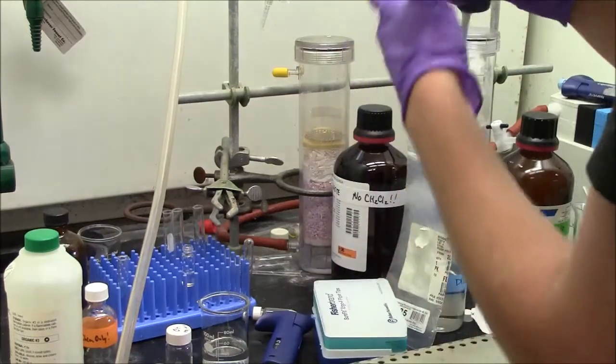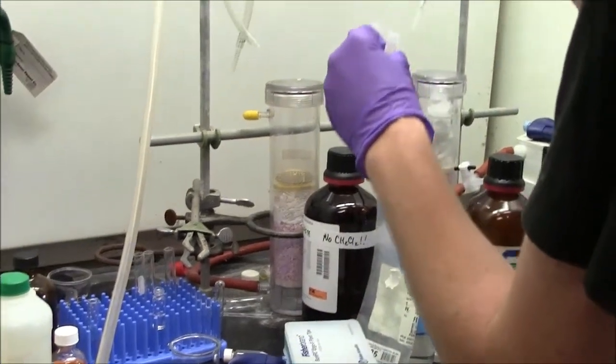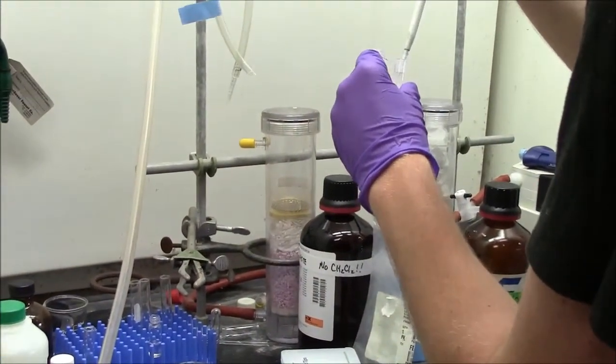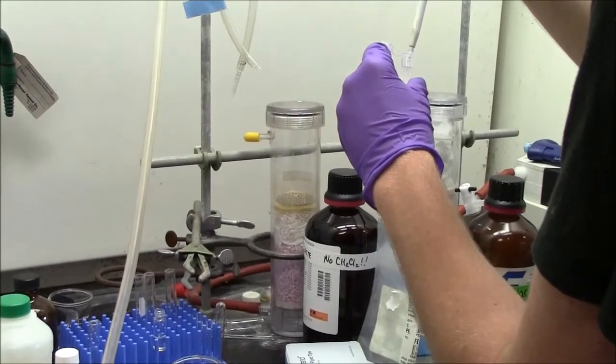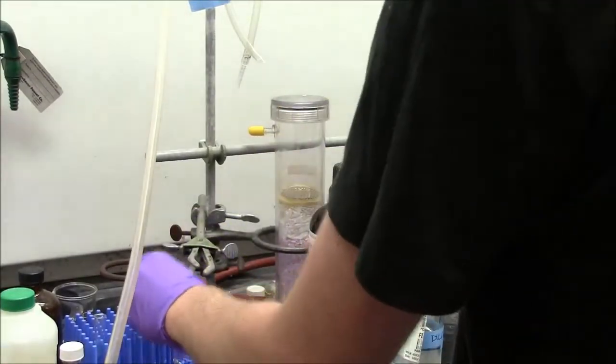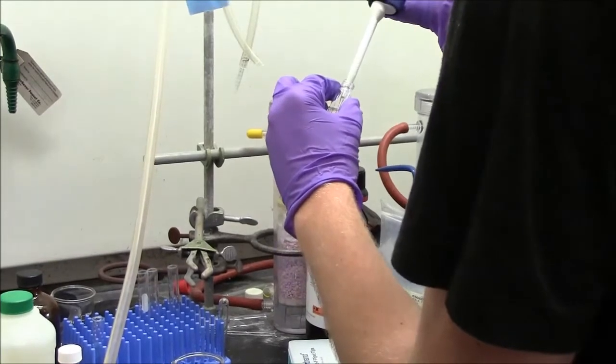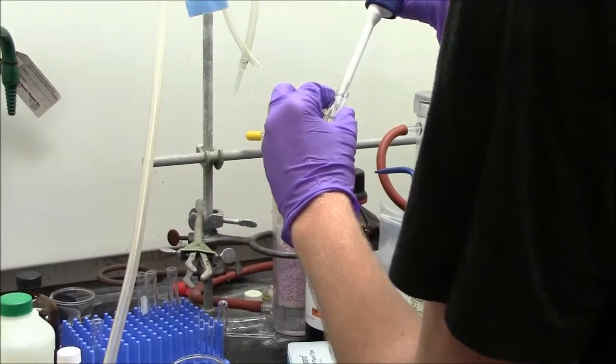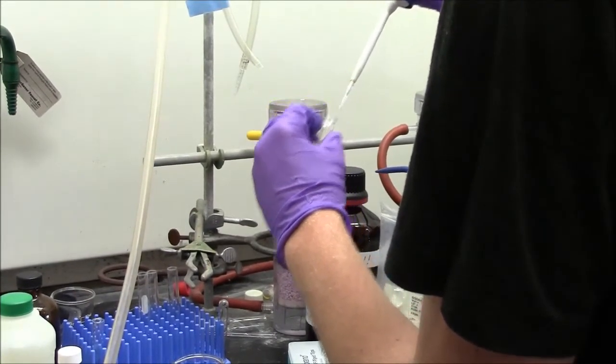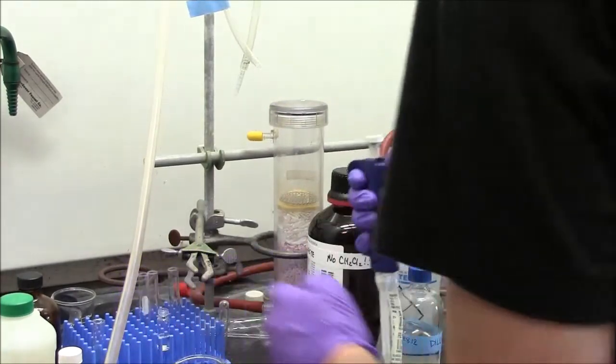Here Nick Markman is adding APS, ammonium persulfate, and SDS to the monomer mixture. He is adding the APS first, that is your free radical initiator, and he will add the SDS second. I am not sure whether the order of addition really matters much.